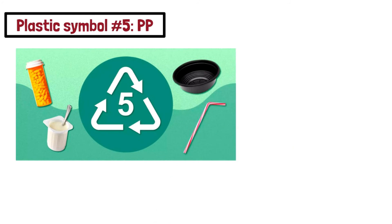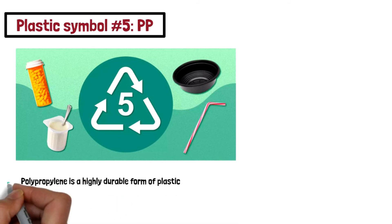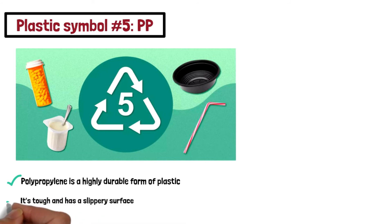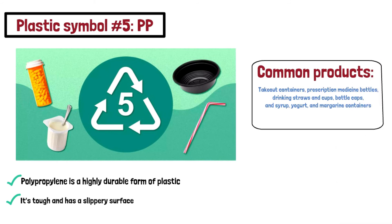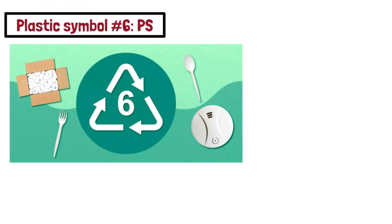LDPE is indicated with recycling symbol number 4. The next one, recycling symbol with number 5, indicates PP — polypropylene. It is a highly durable form of plastic that is tough and has slippery surfaces. It is less dense than common plastics and is very useful for items that need to bend without breaking. Common products include takeout containers, prescription medicine bottles, drinking straws, cups, bottle caps, syrup, yogurt, and margarine containers.